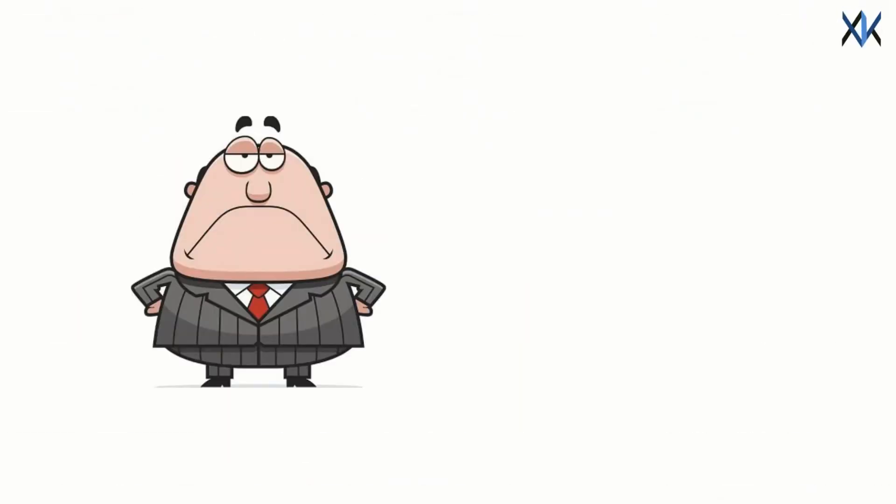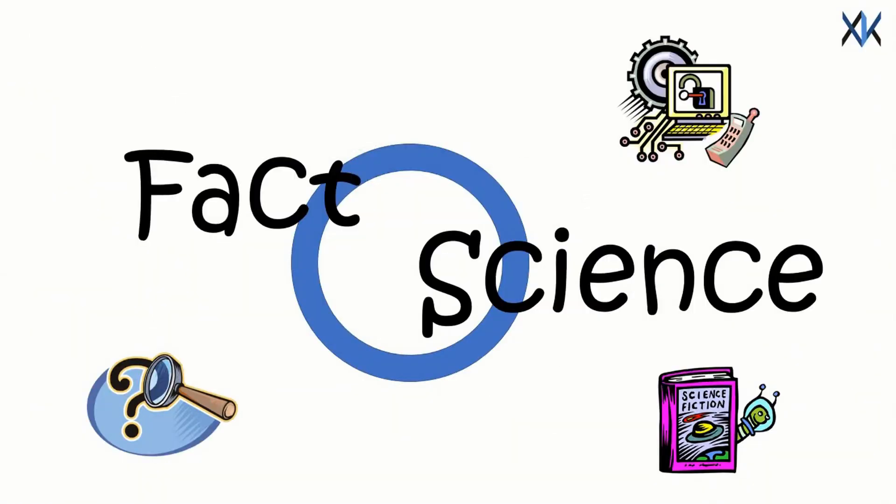So even if we are more developed and complex organisms as compared to C. metallidorans, the tiny bacteria can do things that no man ever could, thus once again proving the superiority of nature itself. So that's it from this episode of FactoScience.